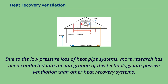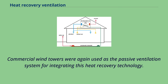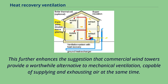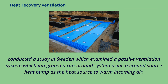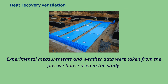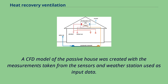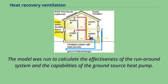Due to the low pressure loss of heat pipe systems, more research has been conducted into their integration into passive ventilation than other heat recovery systems. Commercial wind towers were used as the passive ventilation system for integrating this technology, further enhancing the suggestion that commercial wind towers provide a worthwhile alternative to mechanical ventilation. Flaga-Mariansyke et al. conducted a study in Sweden examining a passive ventilation system integrating a runaround system using a ground source heat pump as the heat source to warm incoming air. Experimental measurements and weather data from a passive house were used as input data for a CFD model to calculate the effectiveness of the runaround system and the ground source heat pump.